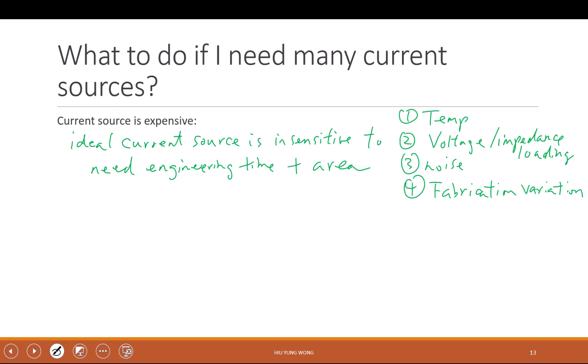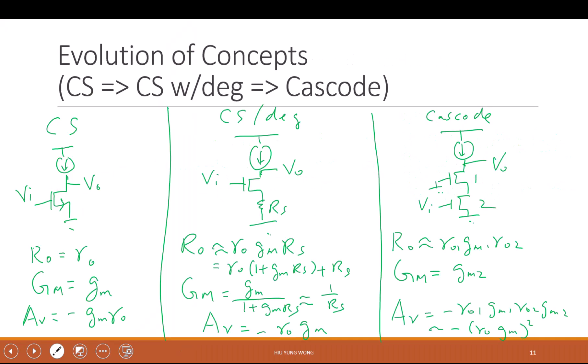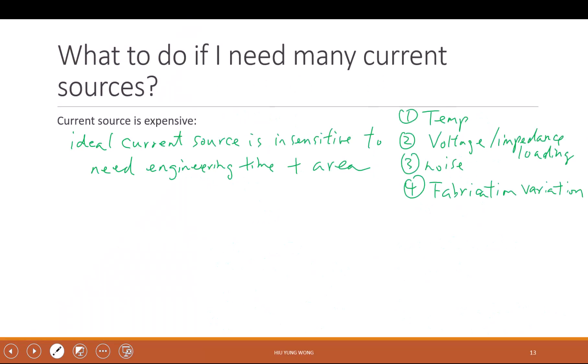But in a circuit you see that every amplifier needs a current source, and you have tons of amplifiers in your circuits. And not just the amplifier, you need to bias other things also like ADC, DAC, or whatever. So it's impossible for you to make this expensive current source.